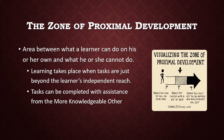Learning takes place when a task is just beyond the learner's independent reach. If it's too easy, they're not challenged and not learning anything new. If it's too hard, they'll get frustrated and not do it at all. Every child's zone of proximal development is different, which is why differentiation is so important in a classroom. You need to know what each child is capable of and what support they need to reach the next step.